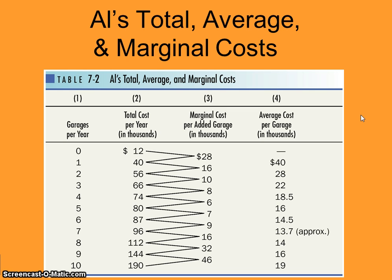Let's review some of the cost figures we've studied. We have total cost figures: total cost, total fixed cost, and total variable cost. We have studied marginal cost, and we've also studied average cost figures including average total cost, average fixed cost, and average variable cost.